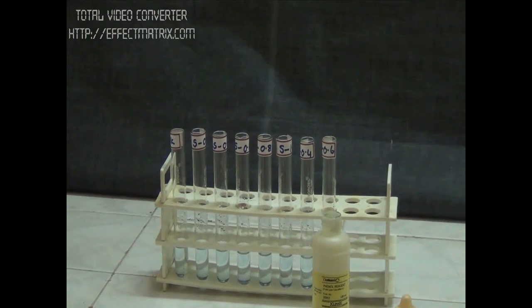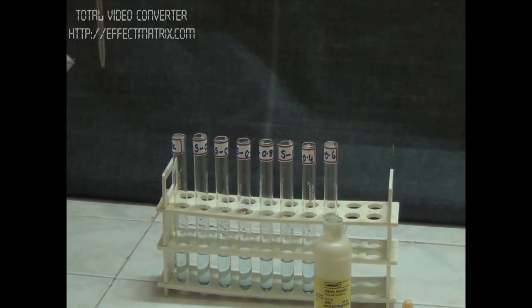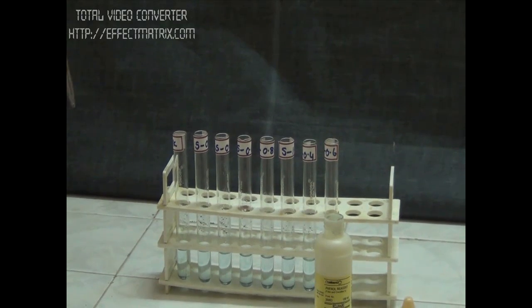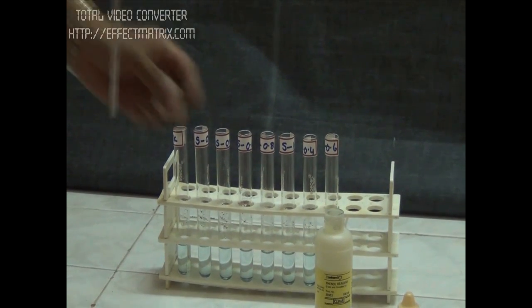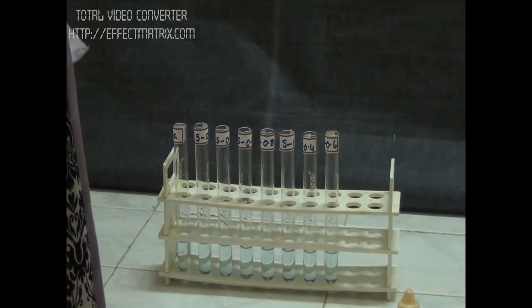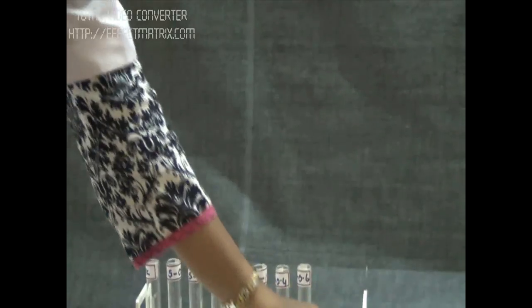After the addition of alkaline CSFO4 and incubation at 37 degrees, we will now add Folin's phenol reagent. We will add 0.5 ml of Folin's phenol reagent to all the tubes.